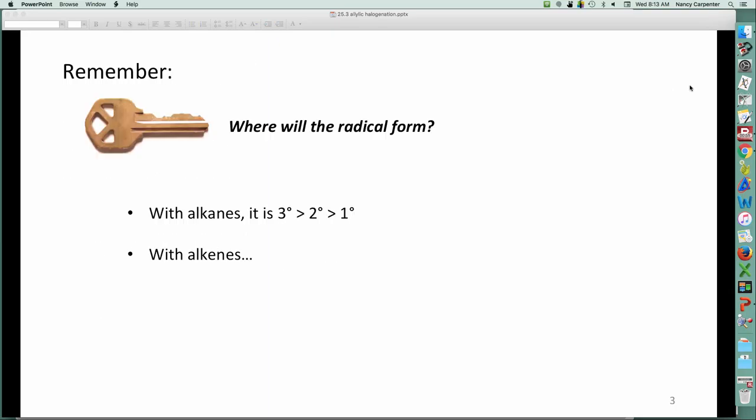So allylic bromination, what's that all about? Well, we know it's the stability of the radical that's formed, right? If it's an alkane, we're going to get a tertiary radical formed preferentially to a secondary, preferentially to a primary. But that's with alkanes. What happens when you have a double bond as part of your molecule? Well, we've seen that resonance explains everything. So if you have a double bond and an allylic hydrogen, then it's the allylic hydrogen that's going to be plucked off because that particular radical can be stabilized by delocalization.